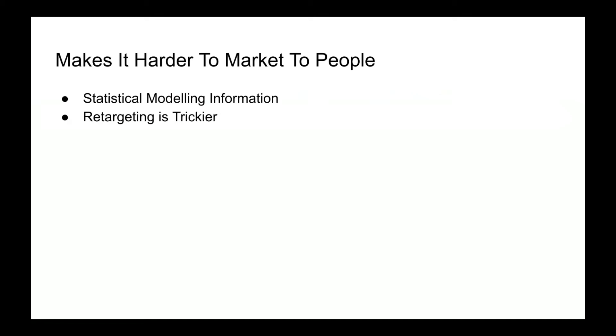This is creating a massive problem between the information that is shown and the information that is actually there, because it's using statistical modeling. Retargeting has gotten a lot harder, and with more people increasingly putting value on privacy, you can expect other platforms such as Android to begin rolling out similar privacy changes in the future.